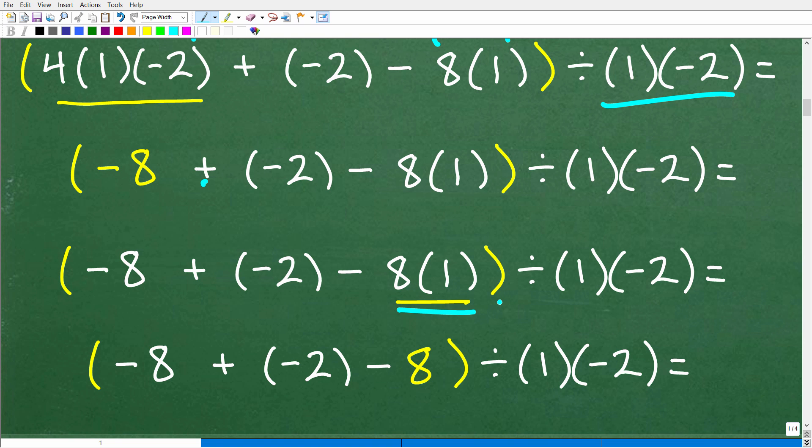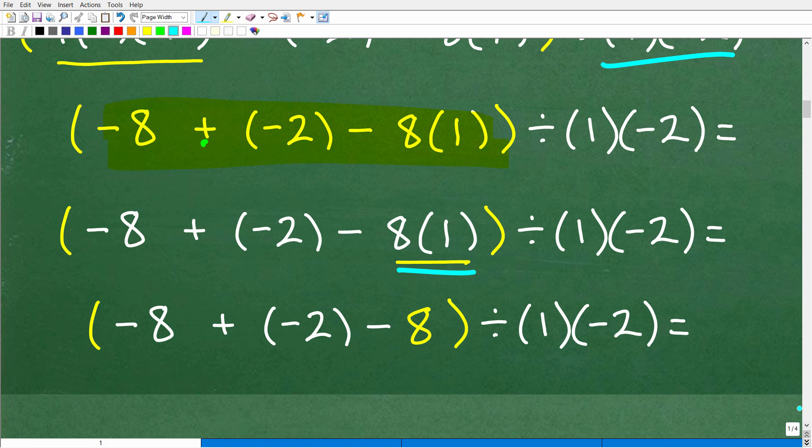All right, so here is our first step. So now we can go ahead and handle this. Again, we have to focus on what is inside of the parentheses first. In other words, we've got to do all this work until we get this down to one value. All right, so we have negative 8 plus negative 2 minus 8 times 1, and 8 times 1, of course, is 8, and we're not done yet, but we're getting there. We have negative 8 plus negative 2 minus 8 divided by 1 divided by negative 2.